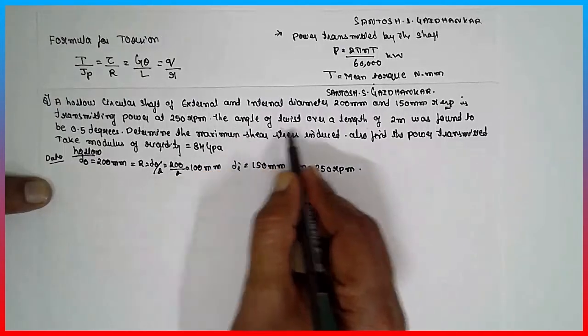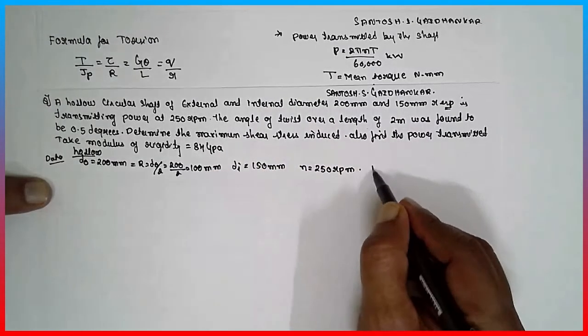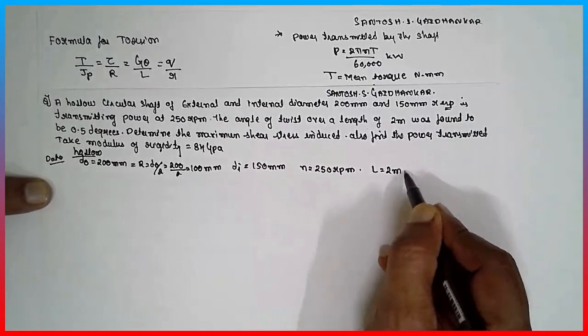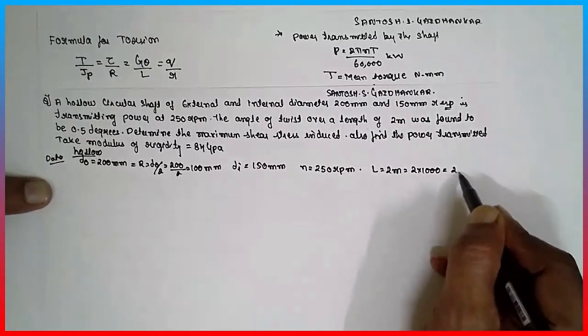Sorry, the angle of twist over a length of 2 meter. Length is given 2 meter, 2 into 1000, it will be 2000 mm.